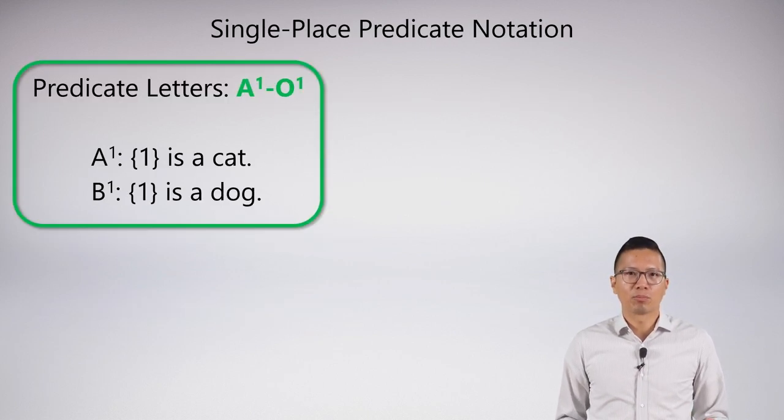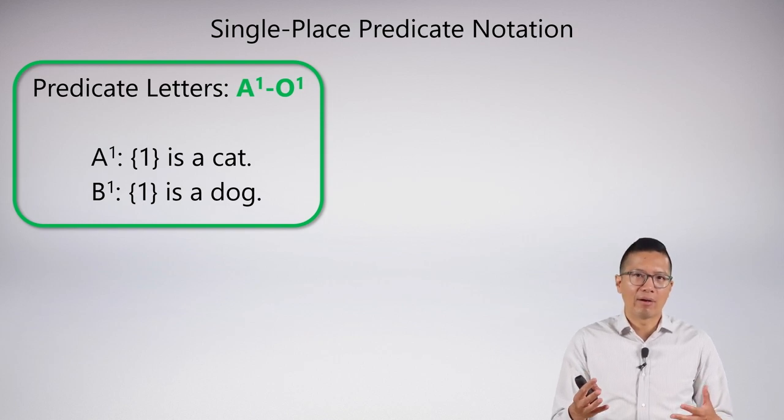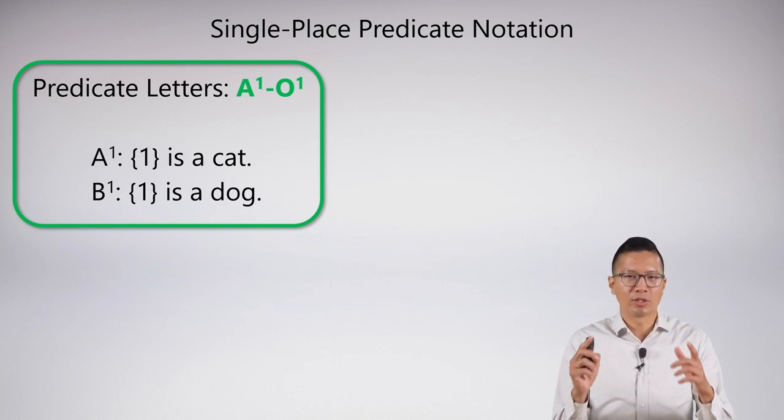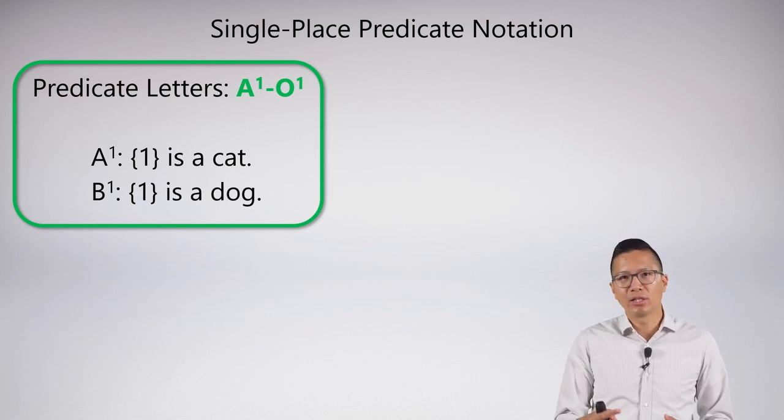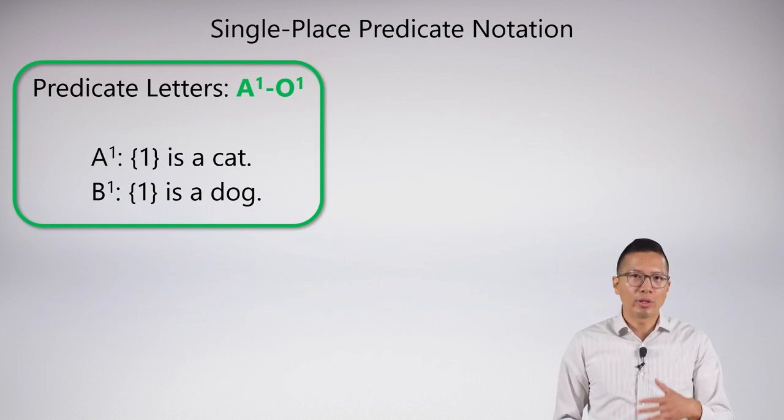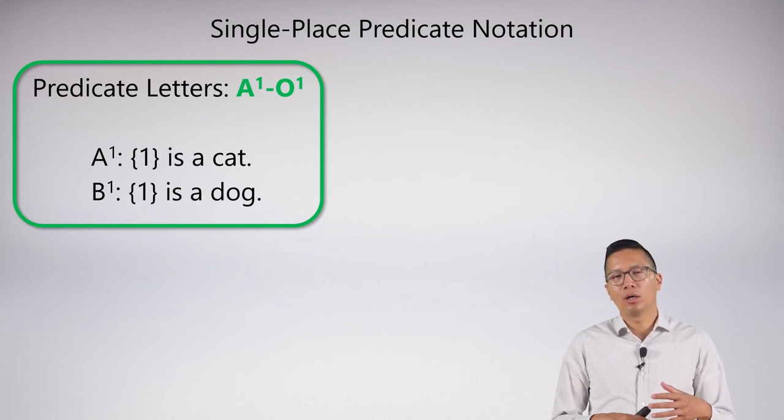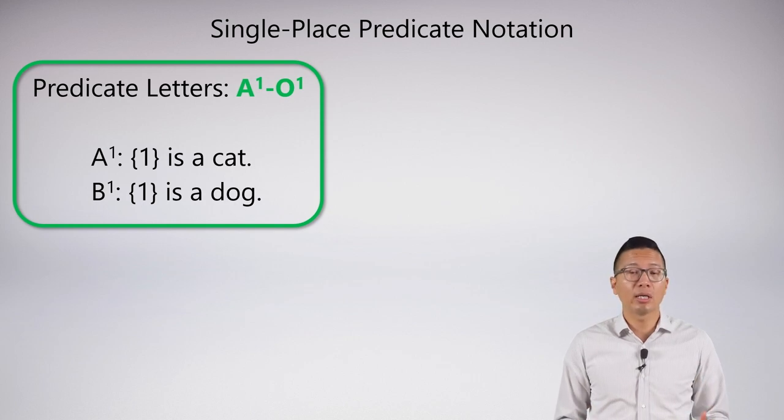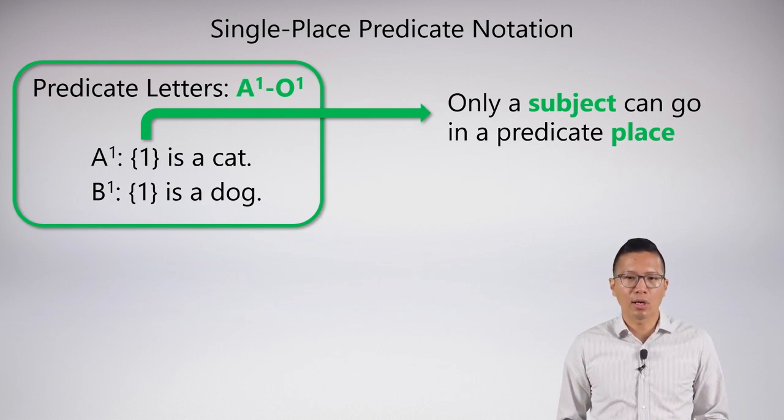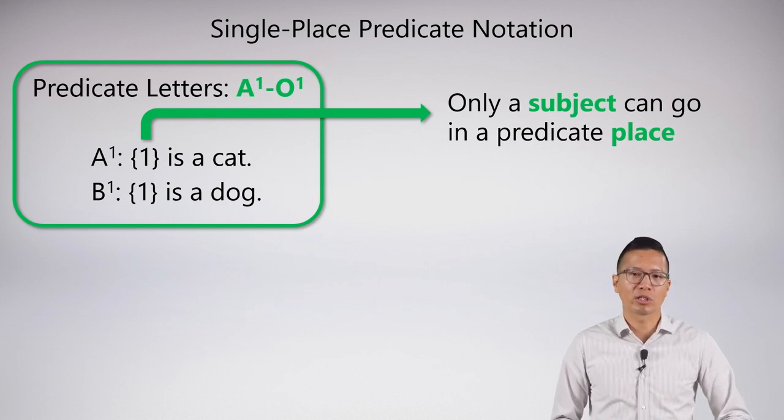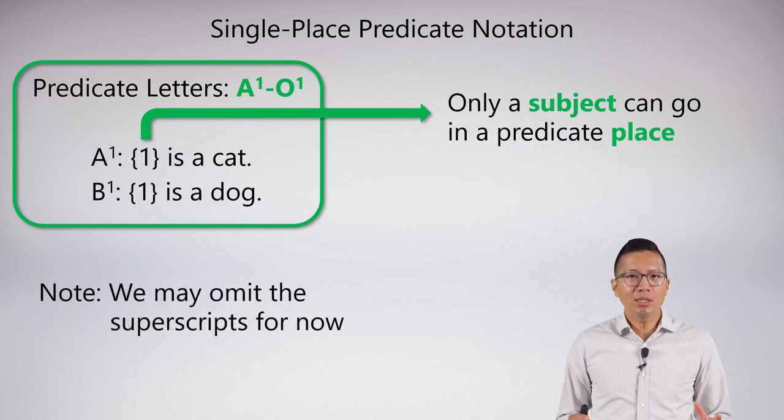When we look at a single-place predicate, you can see that we have the superscript of one, and we always just have one slot because it's a single-place predicate. So we come up with this notation. This notation is the notation that you would in general want to use when you're creating some sort of symbolization scheme of predicates. And only a subject can go in the predicate slot there. Whenever we have the set notation with the one, some sort of subject must go in there.